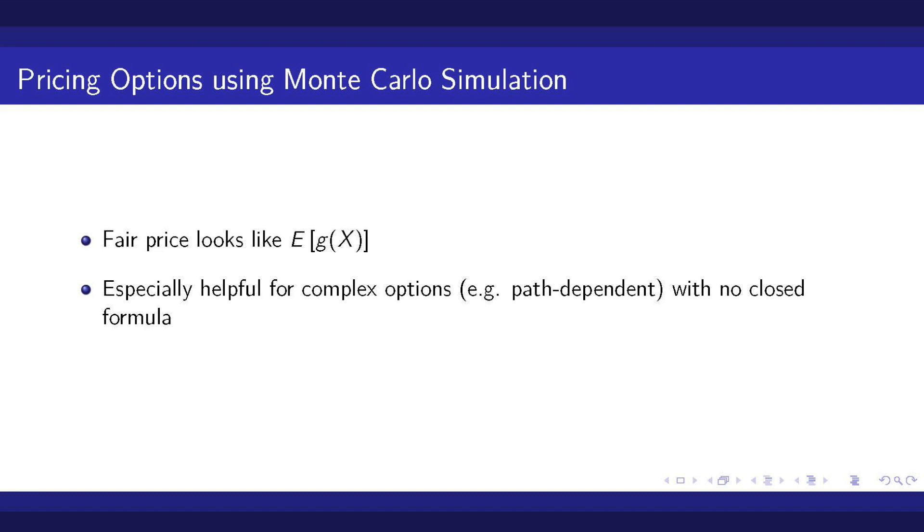This is the easiest example of option pricing and there even exists a closed formula such that we can compare the results of our Monte Carlo estimate to the theoretical value. But the concept remains the same for more complex options. Only the theoretical background of how to simulate the path of the stock gets harder and we have to consider stochastic processes like Brownian motions.